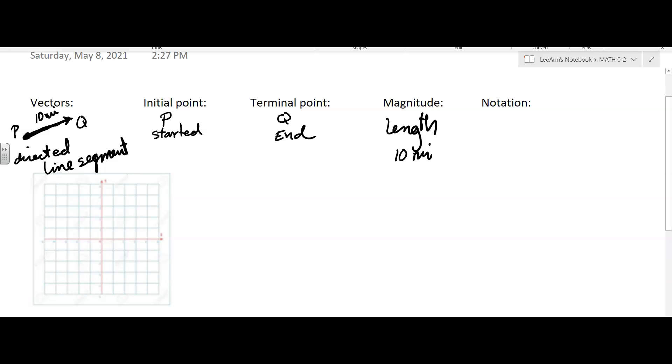So notation for vectors. You're going to use a lowercase letter. A lot of times they'll use V and they'll use W. And they're italicized. They will write them in bold.